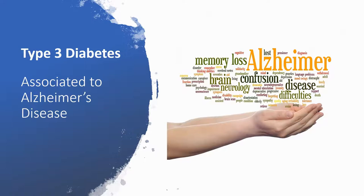Have you ever heard of Type 3 diabetes? It's associated with Alzheimer's disease. Type 3 diabetes occurs when neurons in the brain become unable to respond to insulin, which is essential for basic tasks including memory and learning. Some researchers believe that insulin deficiency is central to the cognitive decline found in Alzheimer's disease. Mayo Clinic participated in a multi-institution clinical study testing whether a nasal insulin spray can improve Alzheimer's symptoms — and we're still waiting for those results.